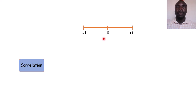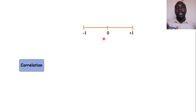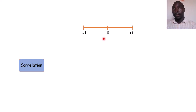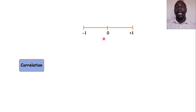This correlation coefficient ranges from negative one, which shows a perfect negative correlation — for example, as age increases, weight decreases — to positive one, which indicates a perfect positive correlation, where as age increases, weight also increases. A correlation coefficient of zero shows that weight does not depend on age.